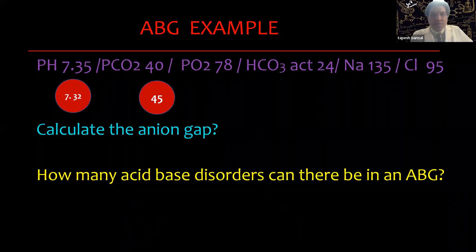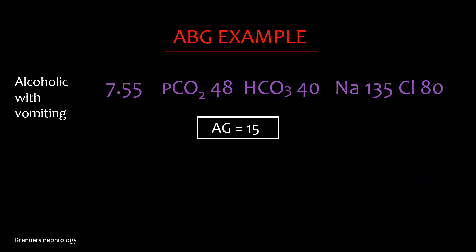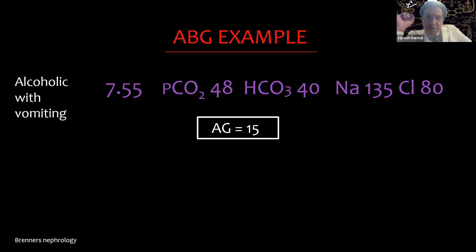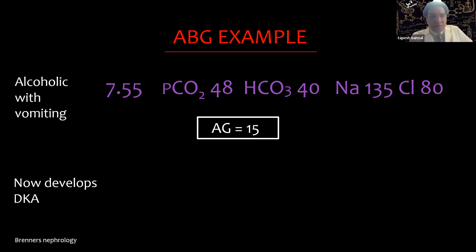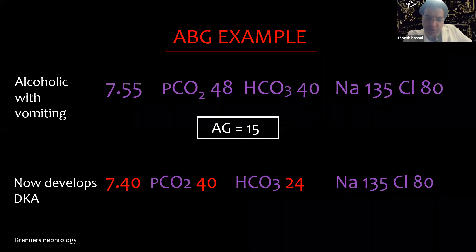Here is another example: an alcoholic with vomiting where the anion gap is 15. The same patient is also a diabetic and goes into DKA. So if he goes into DKA, this is the resulting ABG.